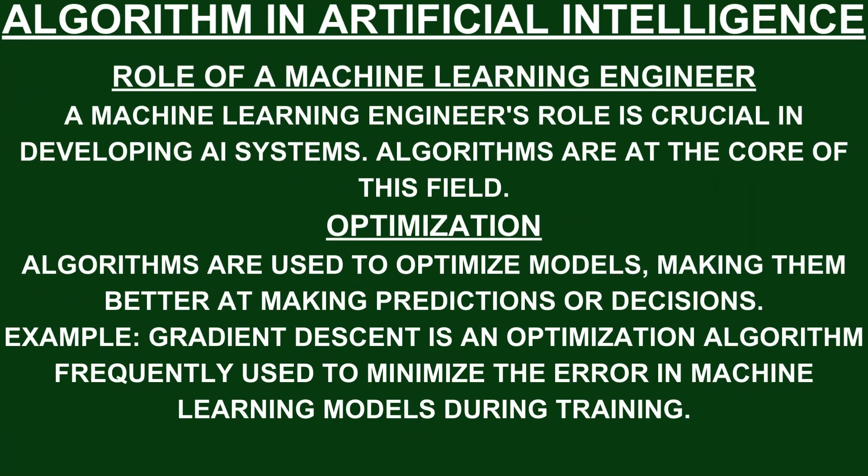The role of a machine learning engineer is crucial in developing artificial intelligence systems. Algorithms are at the core of this field. Optimization: algorithms are used to optimize models, making them better at making predictions or decisions. For example, gradient descent is an optimization algorithm frequently used to minimize the error in machine learning models during training.